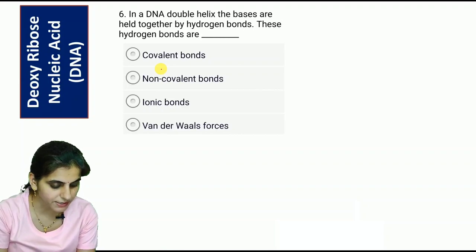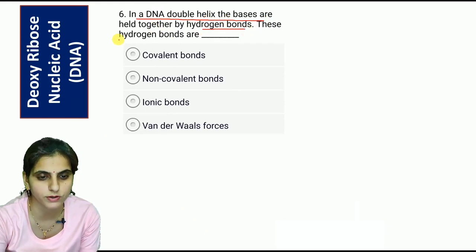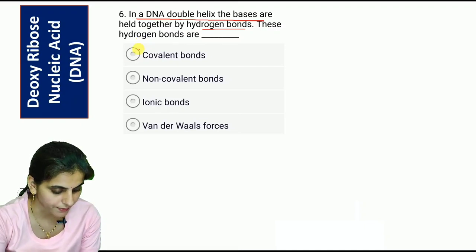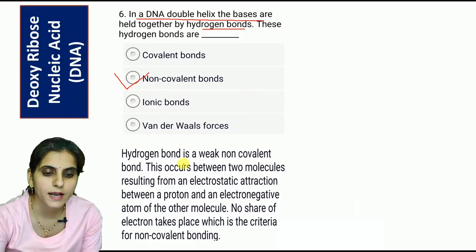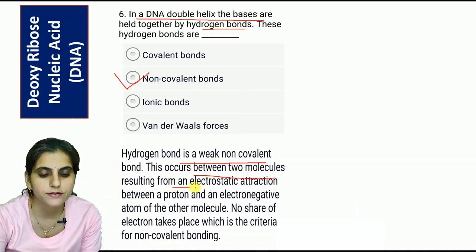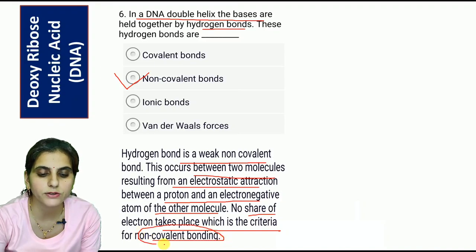Question six: In a DNA double helix, the bases are held together by hydrogen bonds. These hydrogen bonds are non-covalent bonds. A hydrogen bond is a weak non-covalent bond that occurs between two molecules, resulting from an electrostatic attraction between a proton and an electronegative atom of another molecule. No sharing of electrons takes place, which is the criterion of non-covalent bonding.